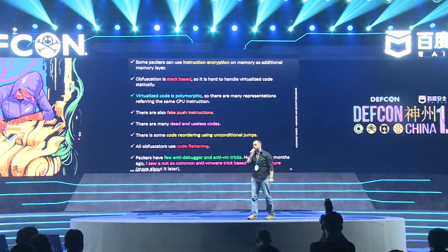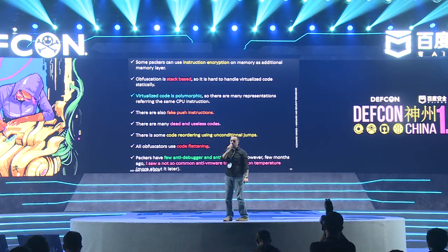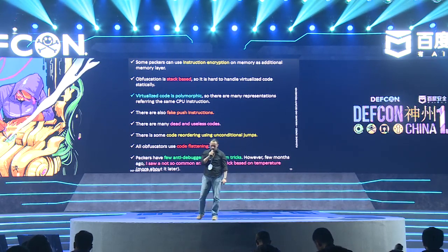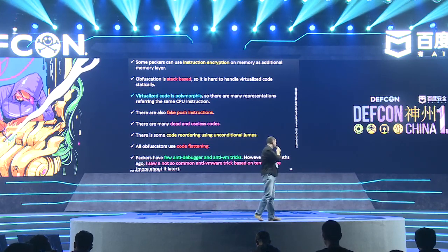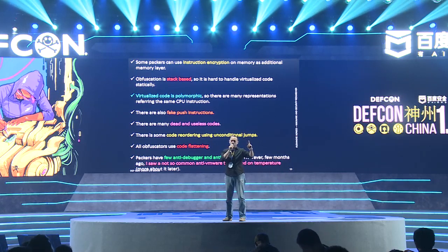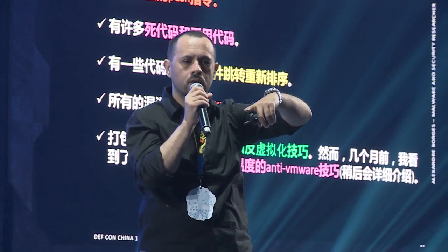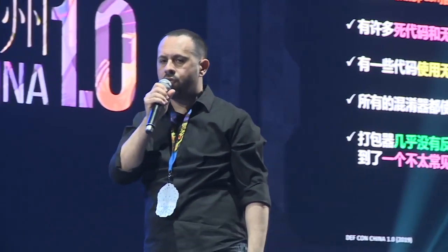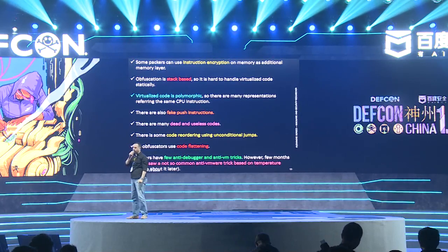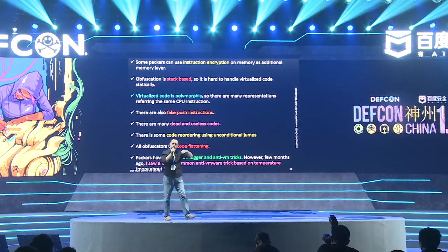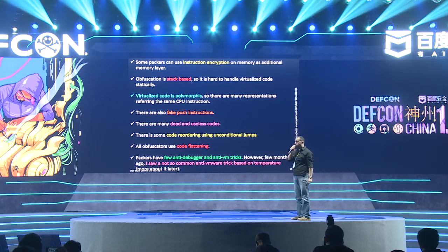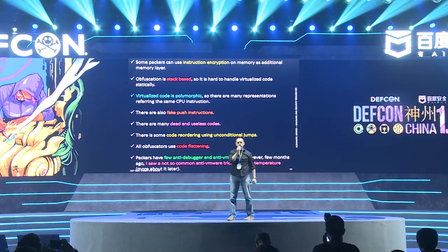An additional trick used by these advanced packers: all instructions are encrypted, unfortunately. Most obfuscation is stack-based, so it's very hard to handle statically. The virtualized code is polymorphic — one Intel instruction can be mapped to several different virtualized instructions. We have lots of fake push instructions, many dead code blocks, and code reordering — a kind of spaghetti code. We also have a special trick named code flattening, and tons of anti-debugger and anti-virtual machine techniques.